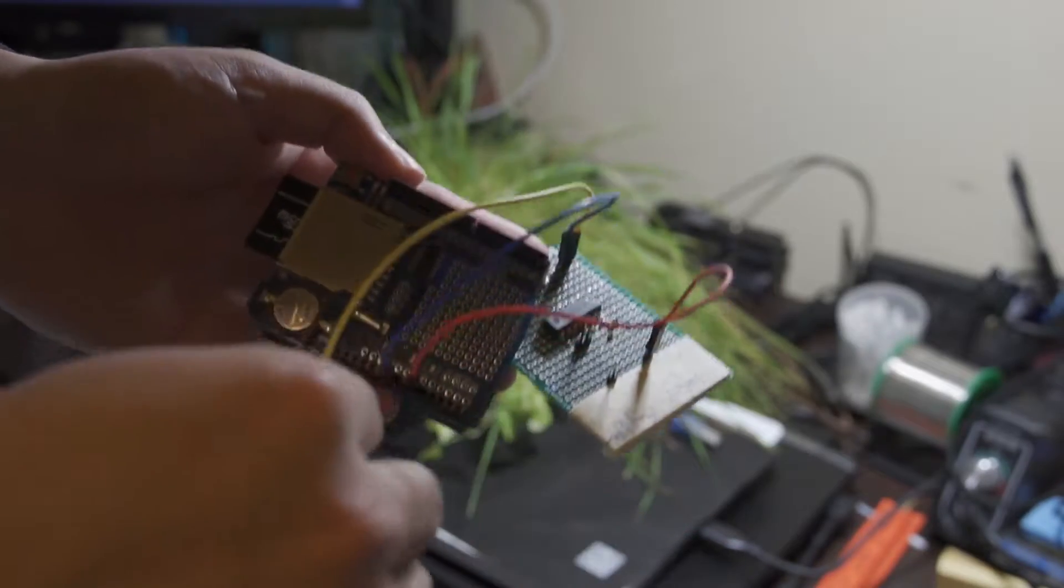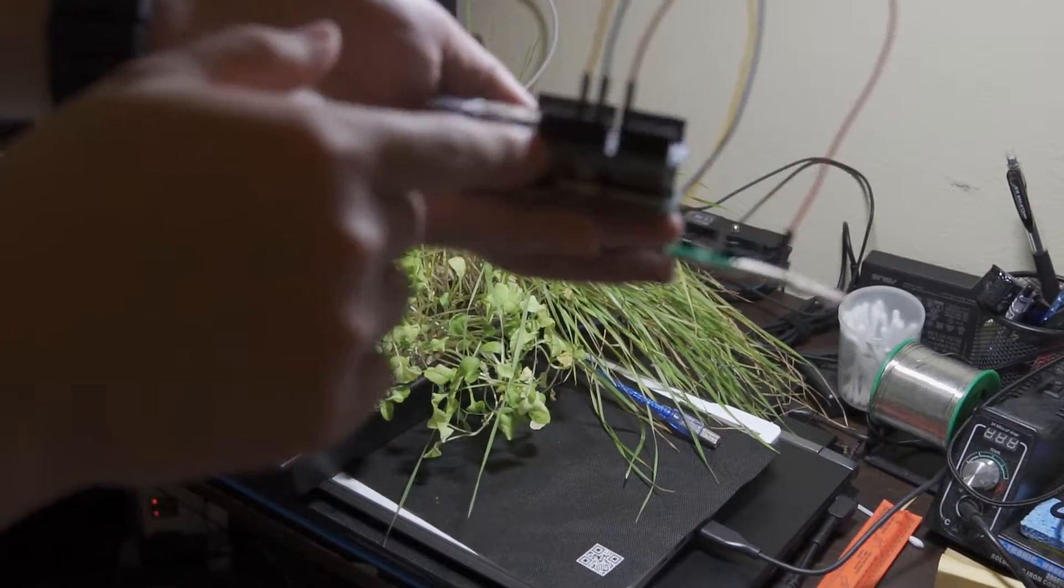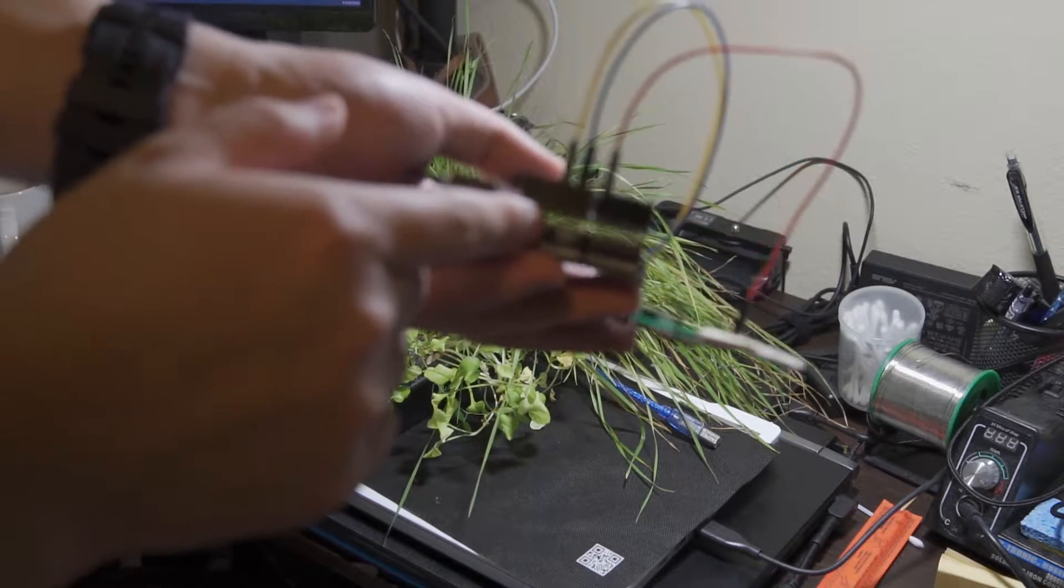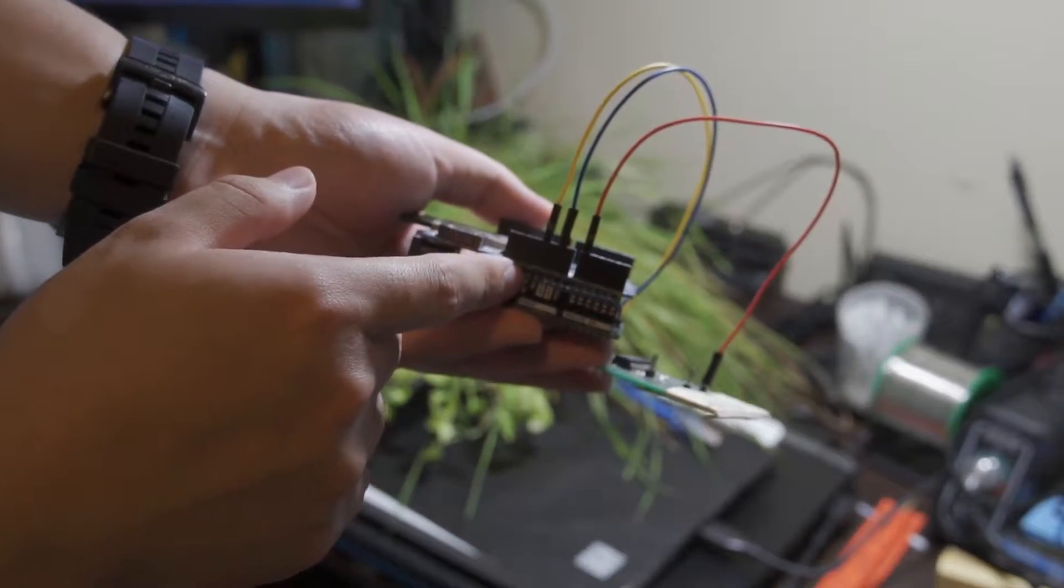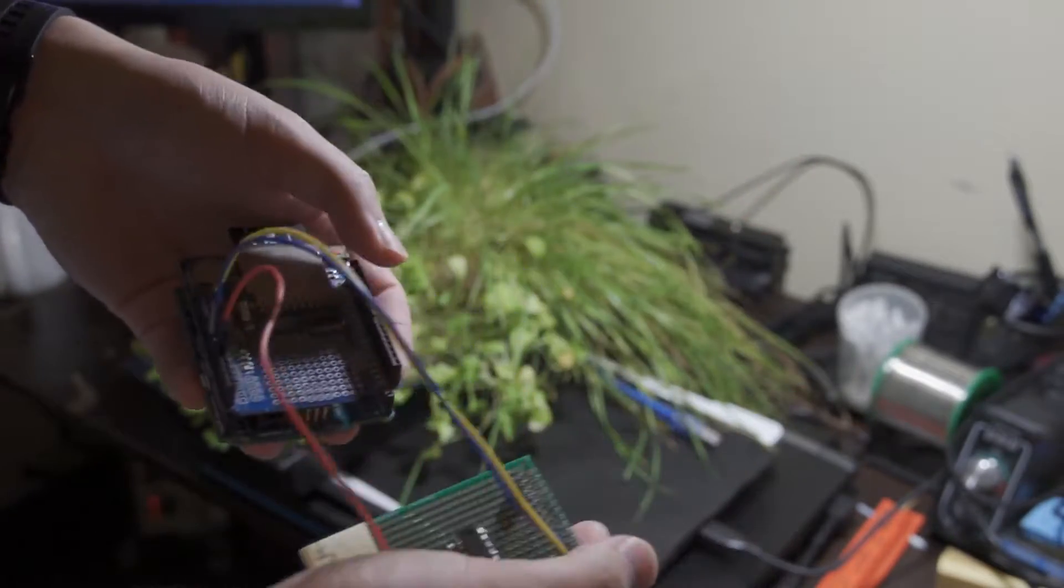And the yellow wire is for 5 volts. So it's here, the 5 volts for the yellow wire. And that should be it for the Arduino.